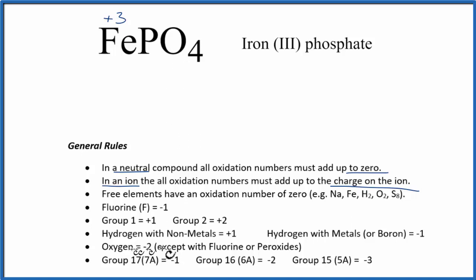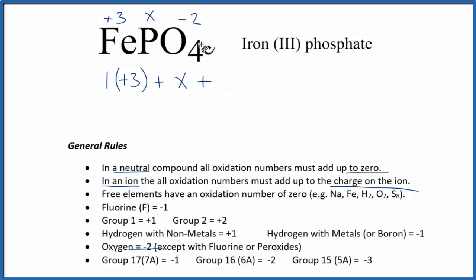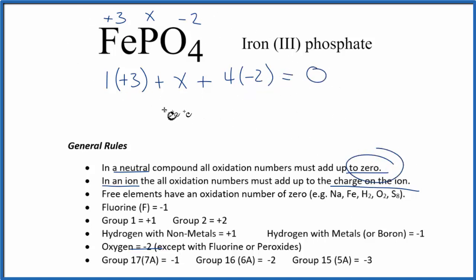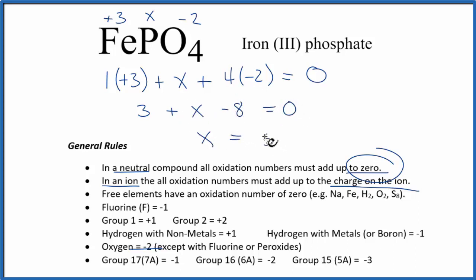Oxygen is minus 2, so we put minus 2 there. Phosphorus we'll call X. So we have: 1 iron × (+3) + X + 4 oxygen atoms × (−2) = 0. That gives us 3 + X − 8 = 0. Solving for X, we get X = +5. So the oxidation number on phosphorus is plus 5.